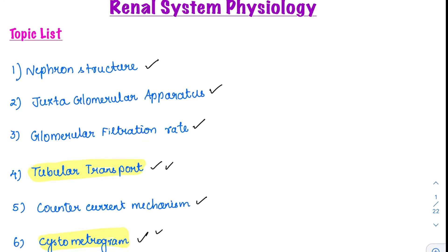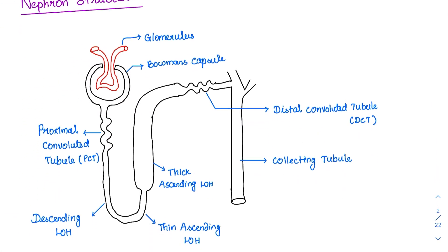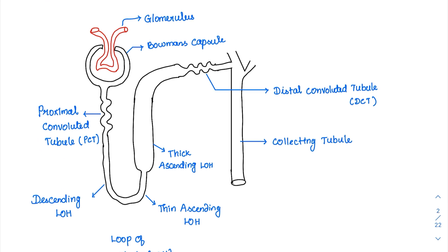Let's start with the topic: nephron structure. This is the classical structure of the nephron given in all the books. The nephron is the basic structure of the kidney, wherein the primary part supplying blood vessels is the glomerulus. The glomerulus is nothing but arteries having an afferent arteriole, an efferent arteriole, and various interconnected arterioles.